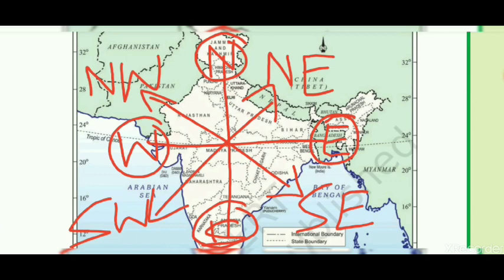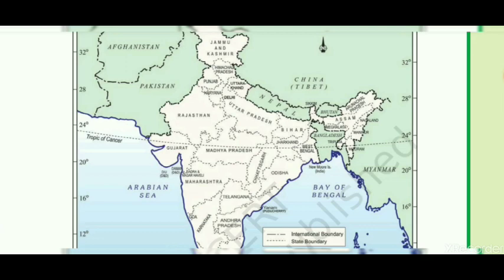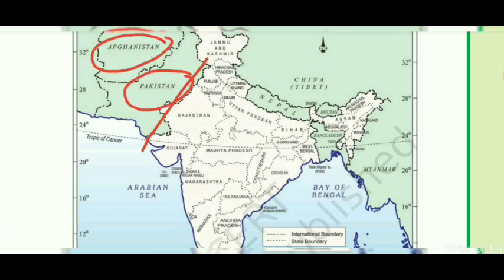With the help of all these directions, we are going to find out the location of India's neighboring countries. Starting with the northwest part of India — in the northwest there are two neighboring countries: the first one is Pakistan and the second one is Afghanistan.